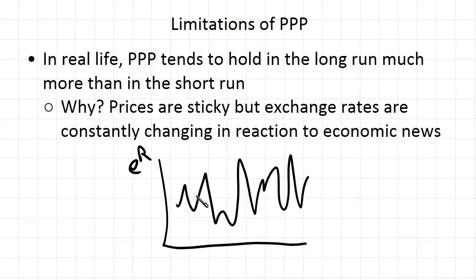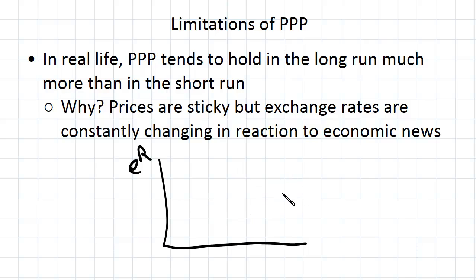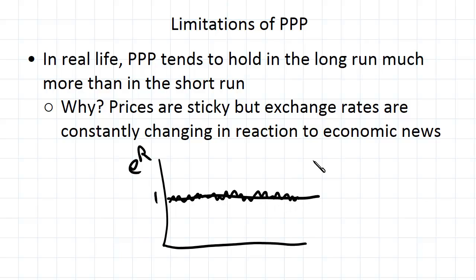But if you look at it over the long term — very zoomed out — we imagine that this is 1 here, and we would find that it would typically sort of stay around 1. In the long run, purchasing power parity holds reasonably well, but in the short run those constant fluctuations mean that you can't expect it to be equal to 1 at any given time.